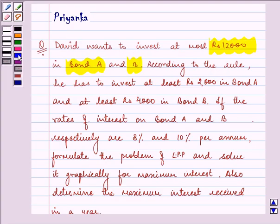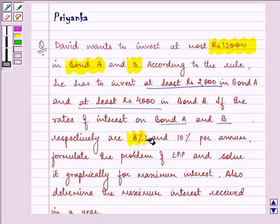According to the rule, he has to invest at least rupees 2,000 in bond A and at least rupees 4,000 in bond B. If the rate of interest on bond A and B respectively are 8% and 10% per annum, formulate the problem of LPP and solve it graphically for maximum interest. Also determine the maximum interest received in a year.